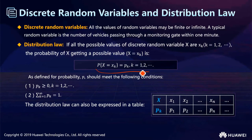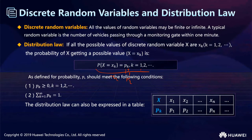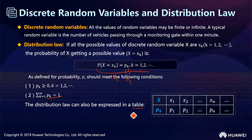The distribution law formula works as follows: k may be 1, 2, 3, and so on. When x equals x_k, its probability is p_k. The total probability must equal 1. The distribution can also be expressed in a table, where x_1 maps to probability p_1, x_2 maps to p_2, and so on.